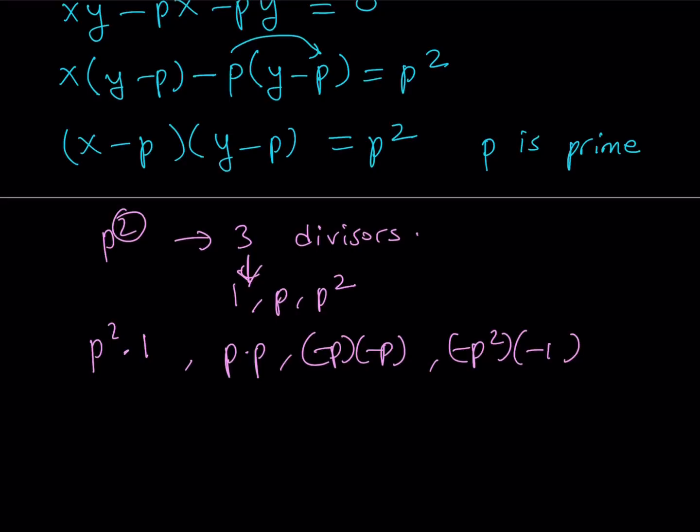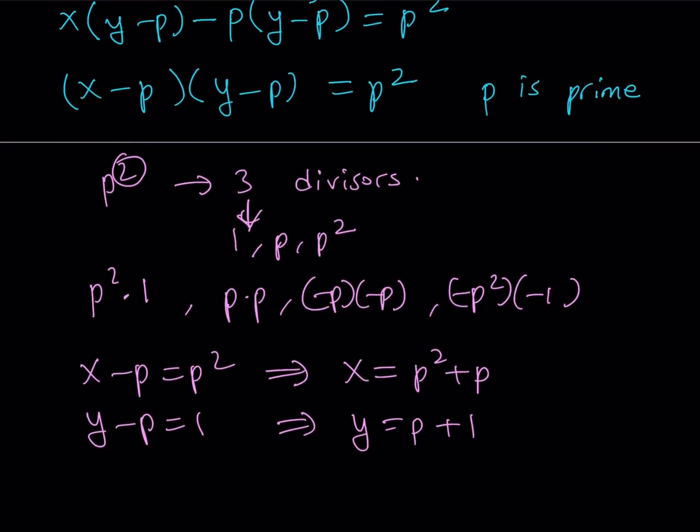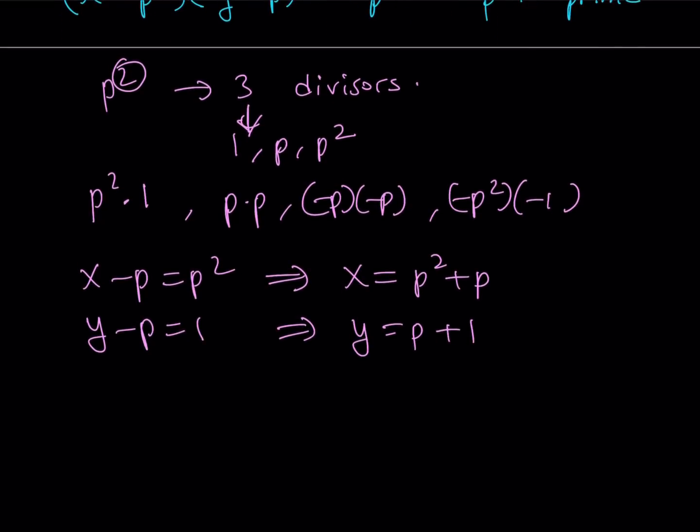So let's go ahead and start with the P squared and one. So this means that X minus P can be P squared, and at the same time, Y minus P can be one. From here, X equals P squared plus P, and Y equals P plus one. So that means that those are the possible values for X and Y when P is a prime number, which also means that they can switch around, because P squared times one is the same as one times P squared. Maybe we can do the switches at the end.